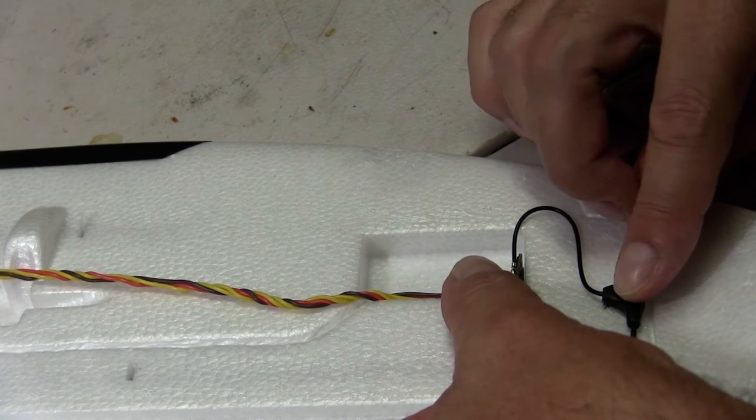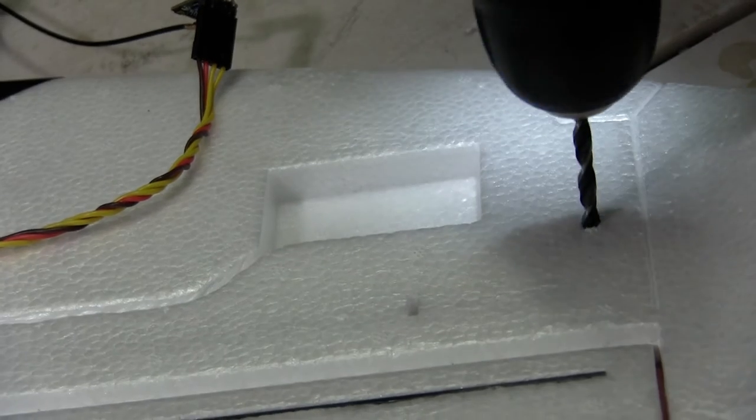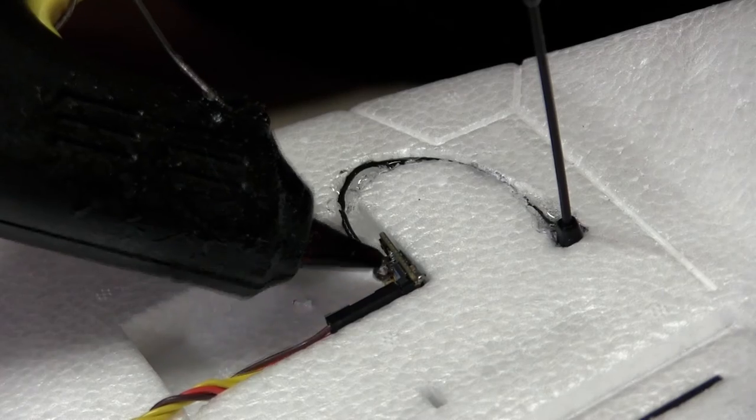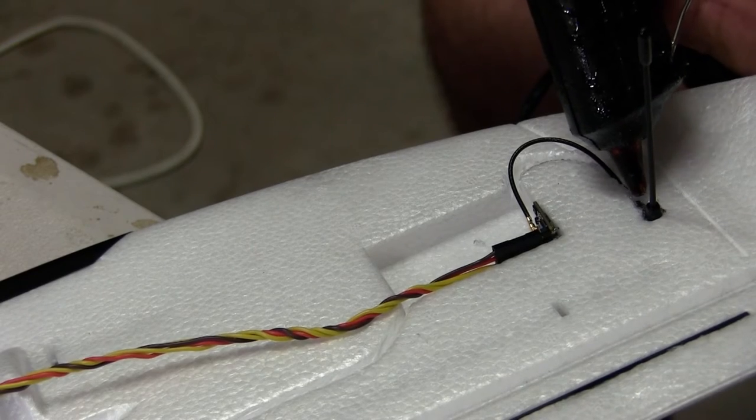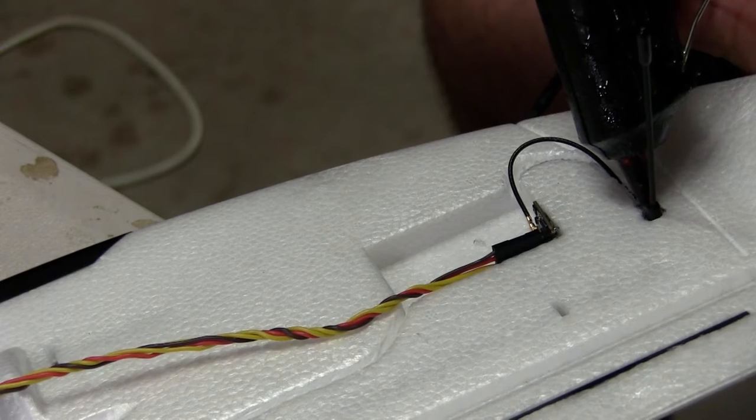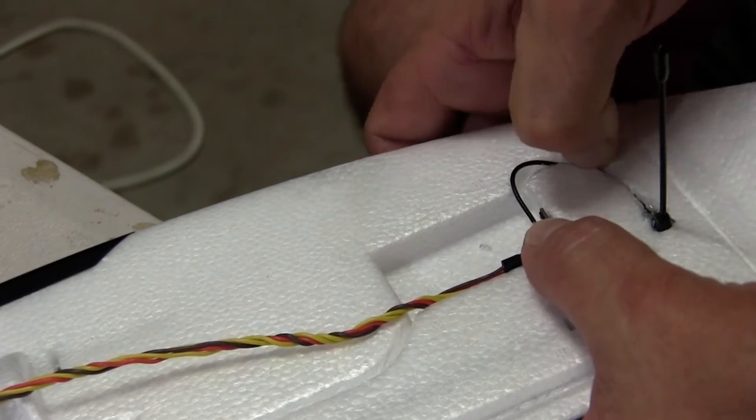We then mount the receiver with hot glue. I like to secure the wiring and the antenna connection with hot glue for added security so nothing comes apart. And then tidy up all your wiring.